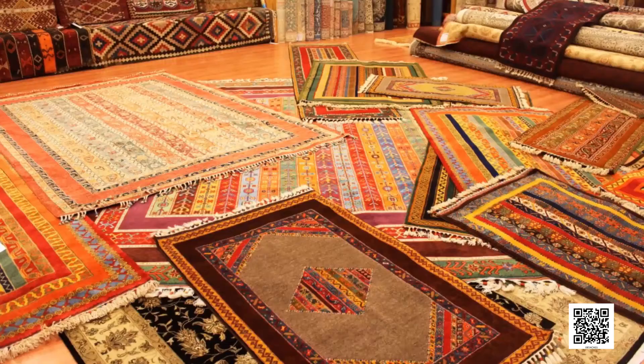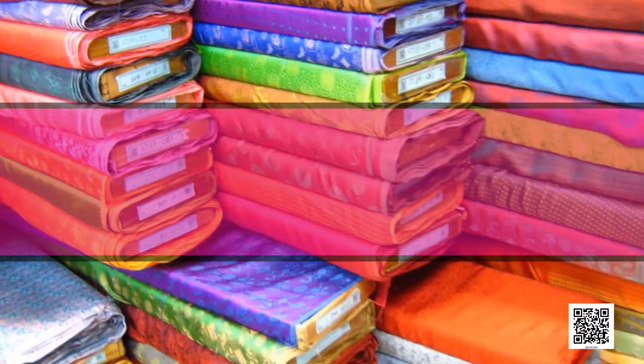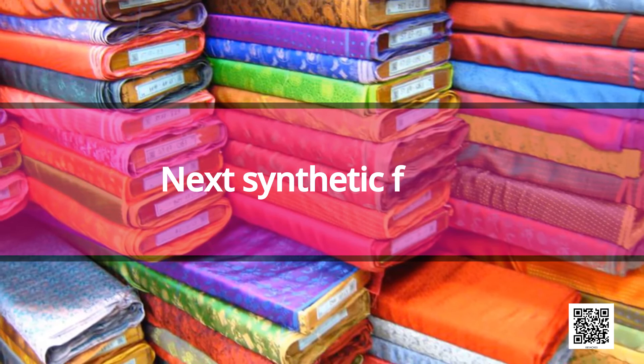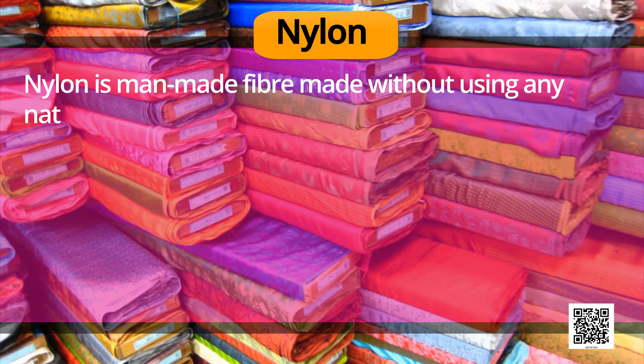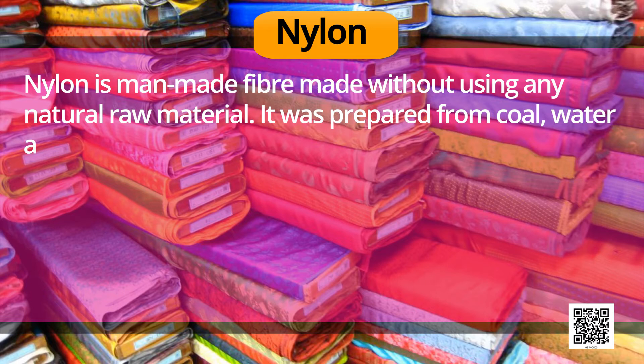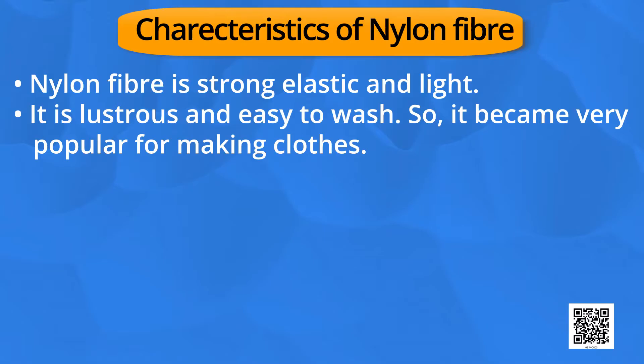The next type of synthetic or man-made fiber is nylon. Nylon is a man-made fiber made without using any natural raw material. It was prepared from coal, water and air in the year 1931, making it the first fully synthetic fiber. Nylon fiber is strong, elastic and light. It is lustrous and easy to wash, so it became very popular for making clothes.